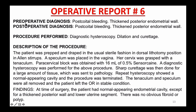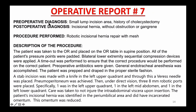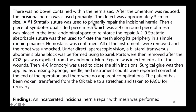And here is your homework. Operative report number six: pre-op diagnosis — post-coital bleeding and thickened posterior endometrial wall; post-op diagnosis — post-coital bleeding and thickened posterior endometrial wall; procedure performed — diagnostic hysteroscopy and dilation and curettage. Operative report number seven: pre-op diagnosis — small lump at incision area, history of cholecystectomy; post-op diagnosis — incisional hernia without obstruction or gangrene; procedure performed — robotic incisional hernia repair with mesh. For the purpose of learning, take your time to read the entire operative report and try to understand how it is performed. Next time you come across these procedures, you will know what to look for — and that is the beauty of learning.